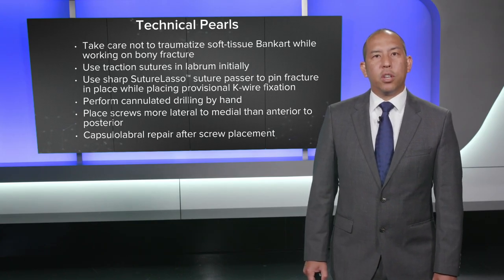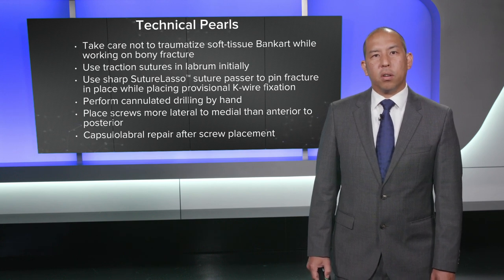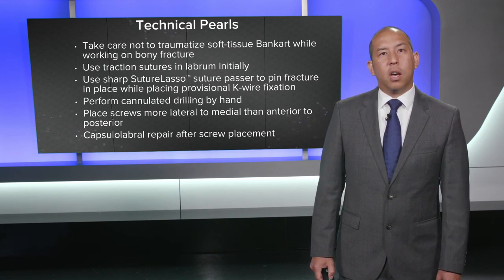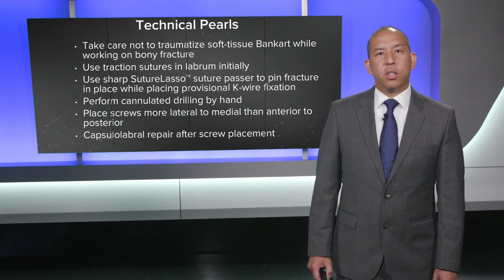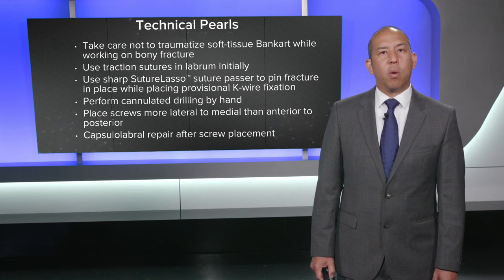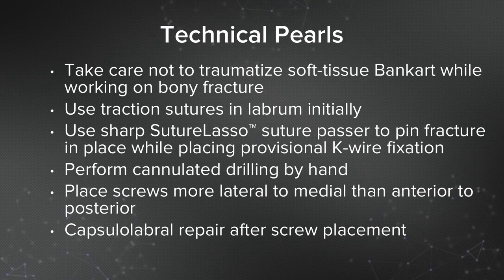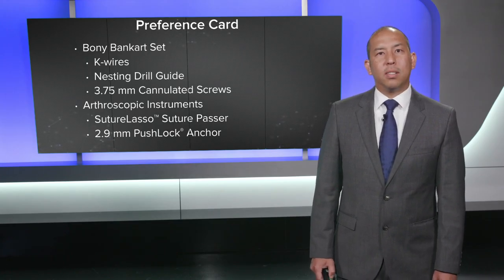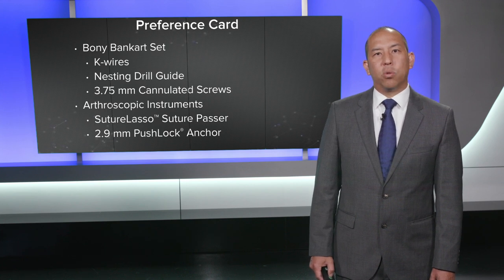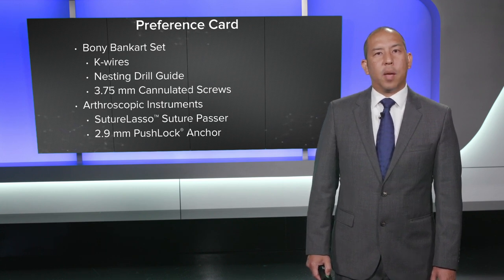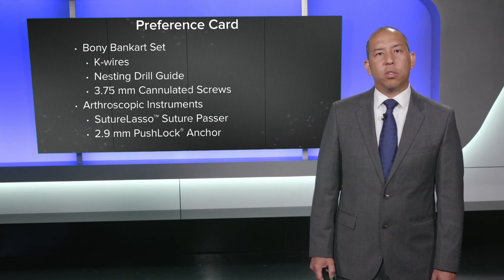Technical pearls: take care not to traumatize the soft tissue Bankart while working on the bony fracture — I use the analogy of a golf ball and a golf tee. Reduce the fracture but keep the labrum intact to create a deeper socket. Use traction sutures initially in the labrum to pull it out of the way while doing the bony work. Use the sharp suture lasso to pin the fracture in place during provisional K-wire fixation. Do cannulated drilling by hand to avoid disrupting the fracture. Screws are placed more lateral to medial than anterior to posterior. Perform the capsule-labrum repair after screw placement to cover the screw heads. My preference card includes the bony Bankart or glenoid bone loss set with K-wires and a long nesting drill guide, 3.75 cannulated screws, a sharp suture lasso, and 2.9 push locks.